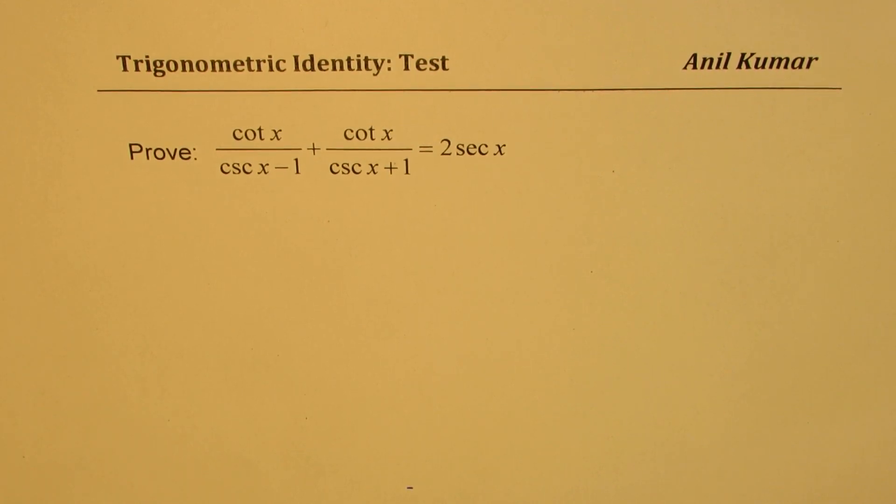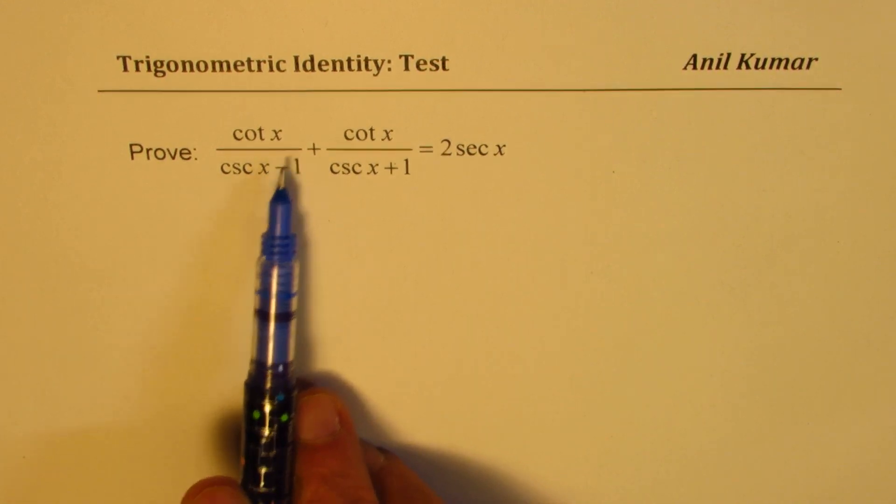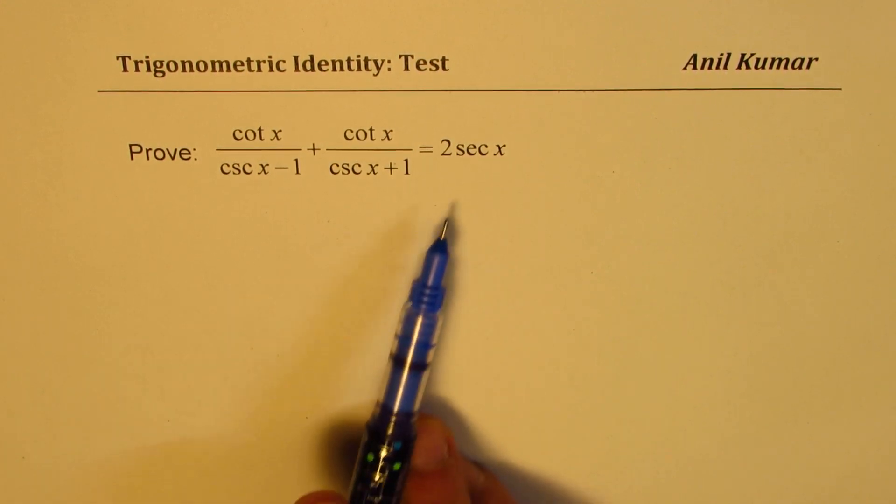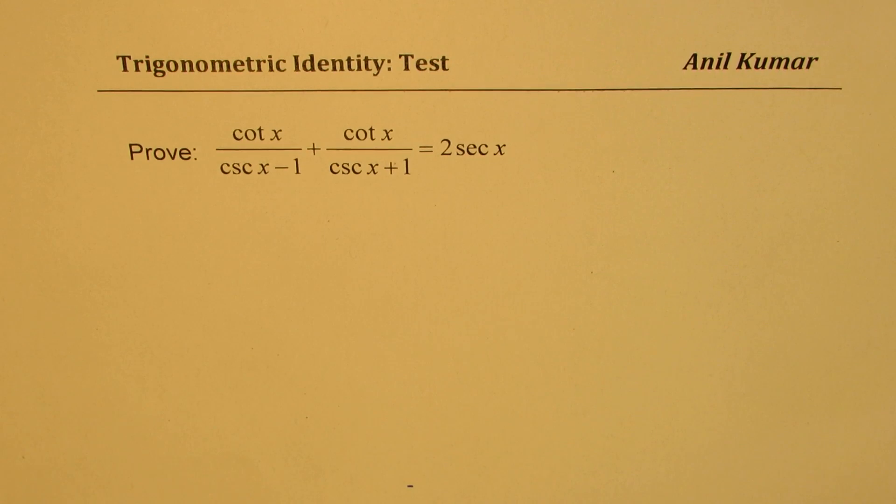Here is one of them. You need to prove cot x divided by cosecant x minus 1 plus cot x divided by cosecant x plus 1 equals 2, 2 times secant x.